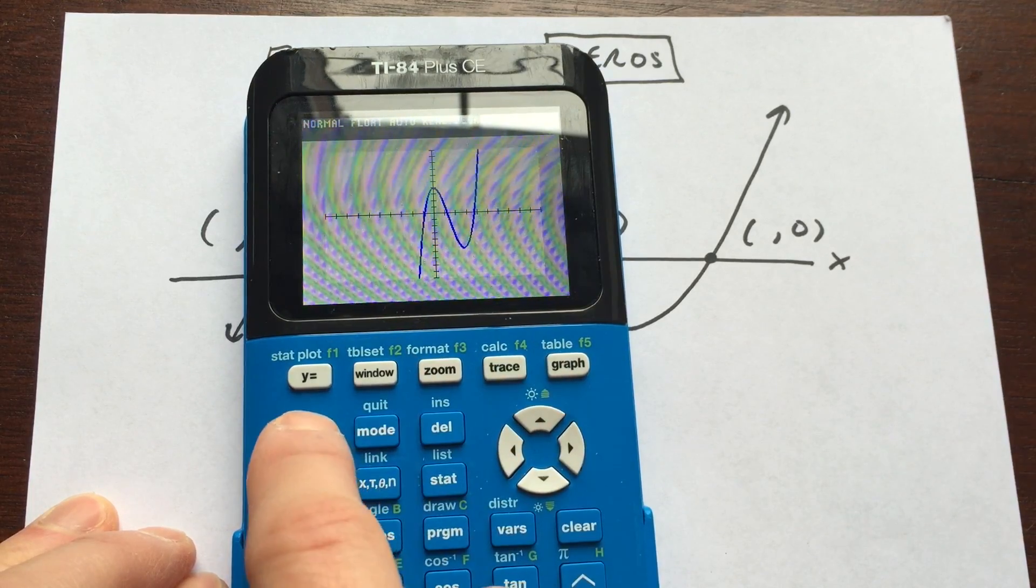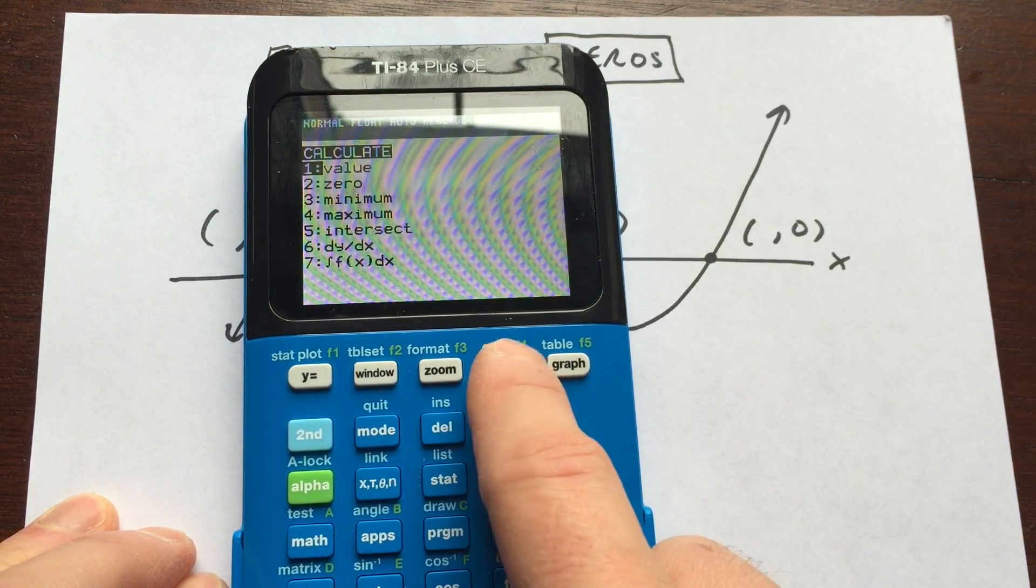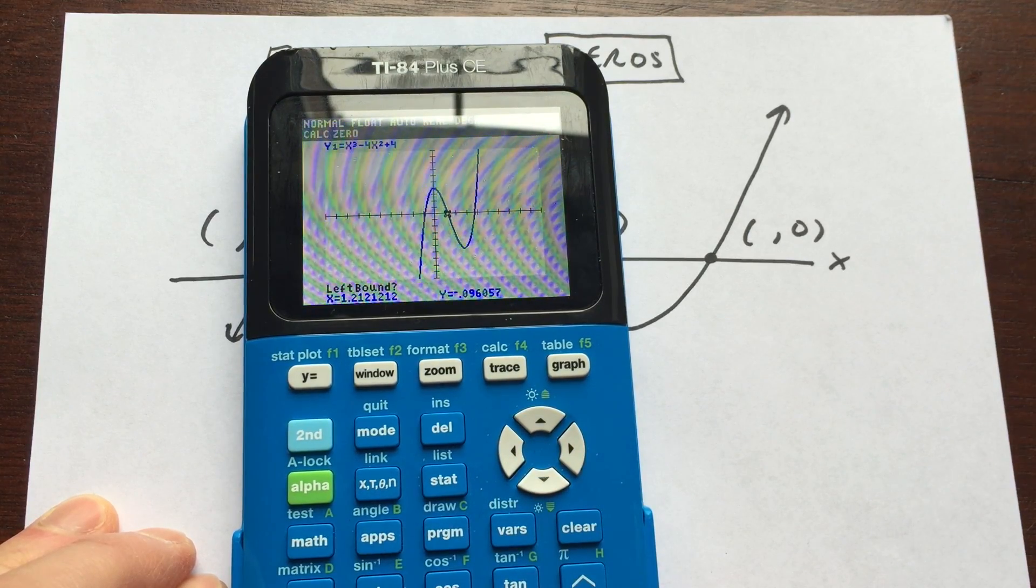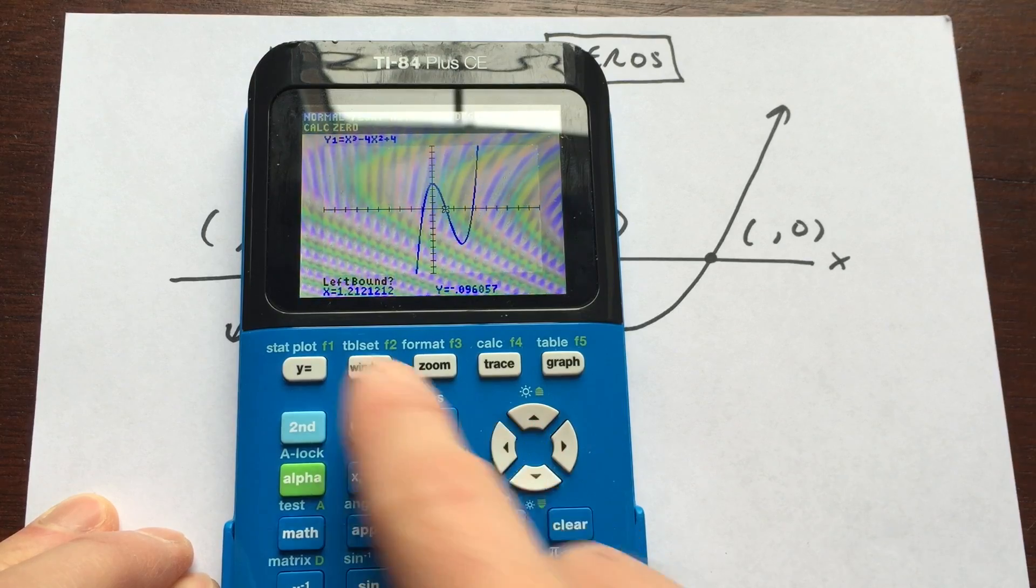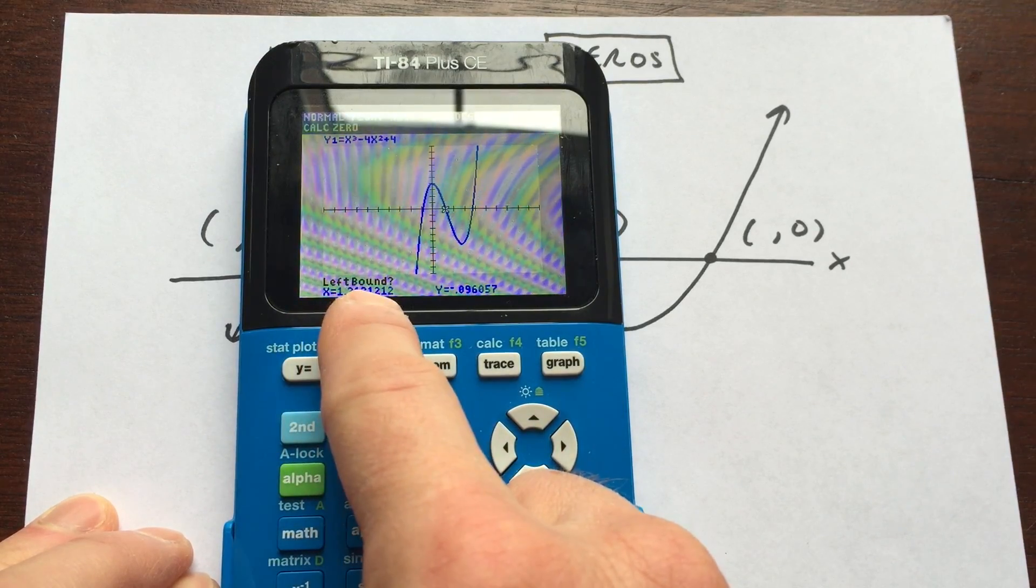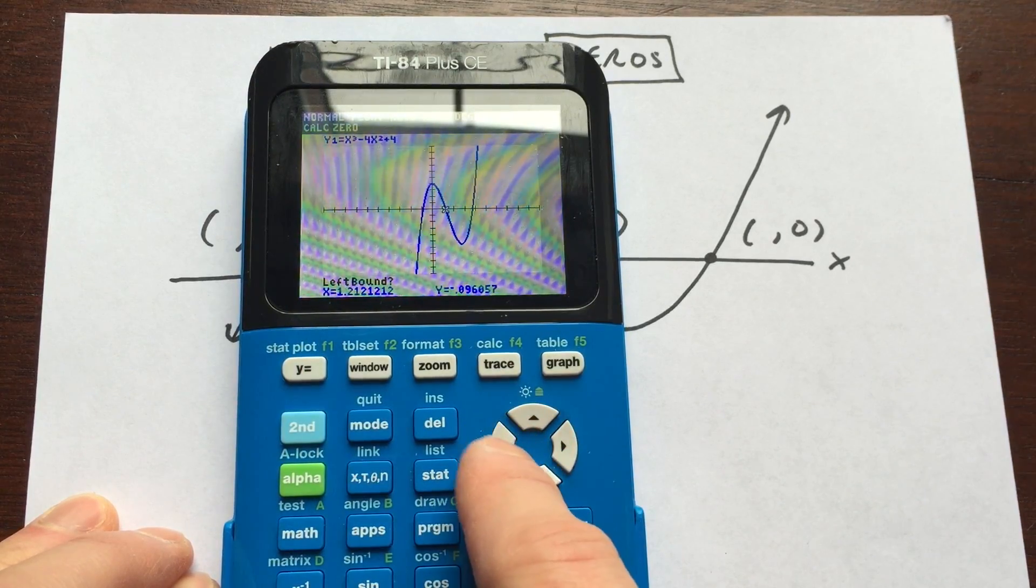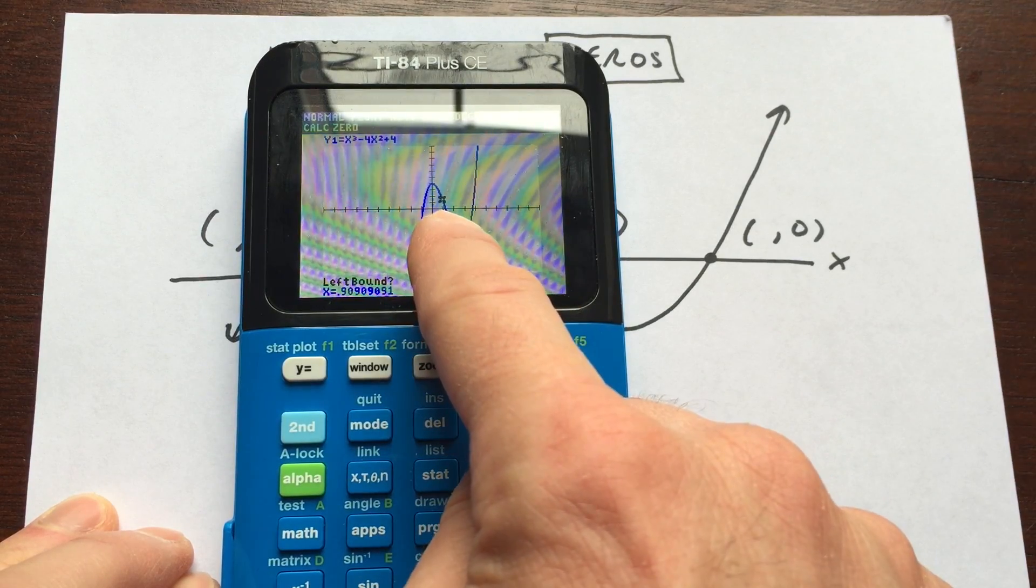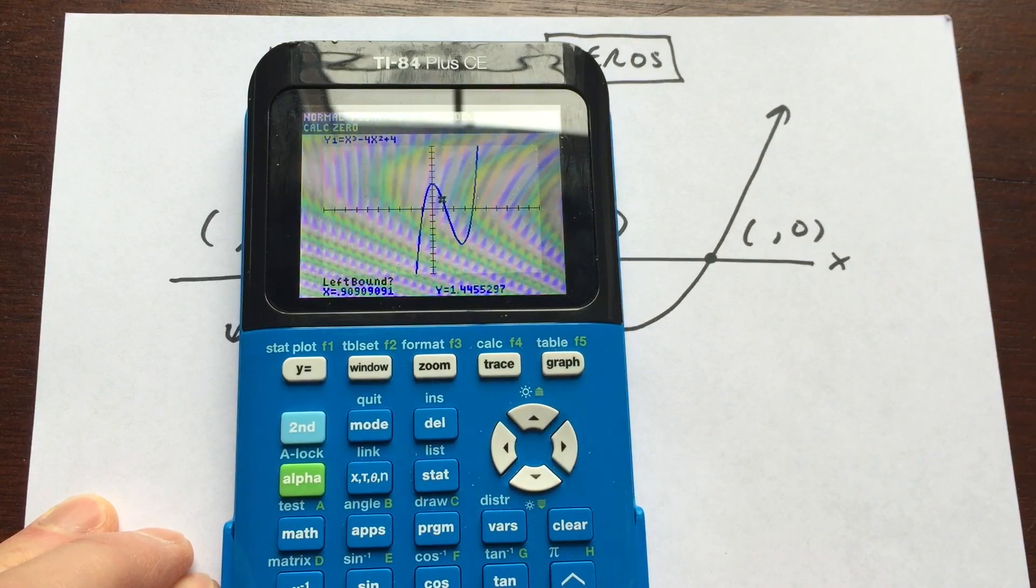So what we're going to do now is go back to second, calculate, and you can see number two is zero. We're going to press enter. And what I'm going to do is, you can see here in the left-hand corner, see how it says left bound? What we want to do is arrow just a little bit to the left and above that point where it's crossing the x-axis. So I'm going to press enter.